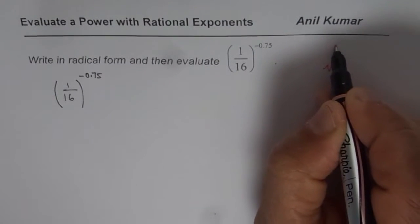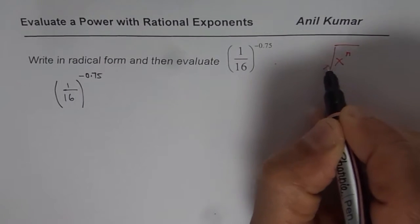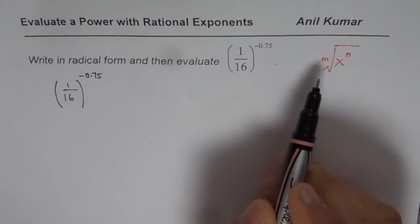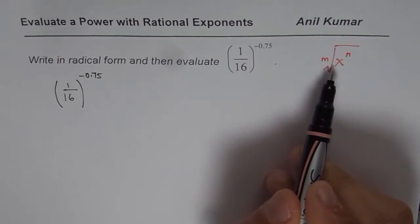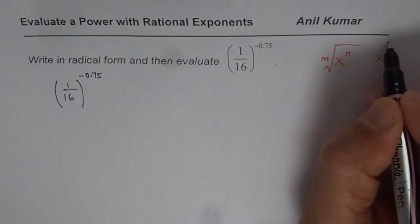Radical form is kind of like this. You have to write in x to the power of some root here and some root here. So, that is the radical form. Or exponent form is x to the power of n over m.